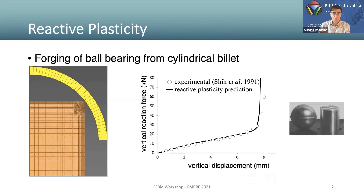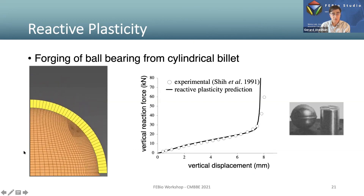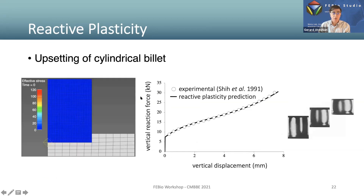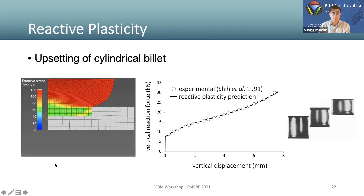FEBIO simulations are validated against experimental data. For a cylindrical billet being forged into a ball bearing, the forging process is a contact analysis where the cylinder deforms into a sphere. The force needed agrees very well with simulation results until the very last step — likely due to the frictionless contact assumption. For upsetting of a cylindrical billet under compression with lateral bulging, the FE Bio response also shows very good agreement with the experimental data from Shi et al.